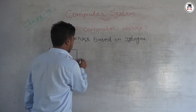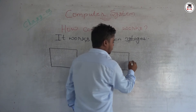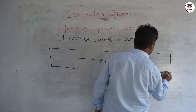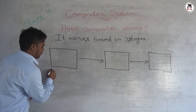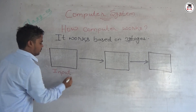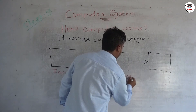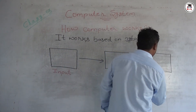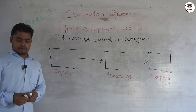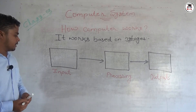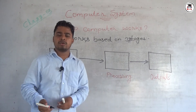So, what are these three stages? In the first stage, input is provided. In the second stage, the input is processed. In the final stage, we get the output. So, there are three terminologies: input, processing, and output. We will see them one by one.